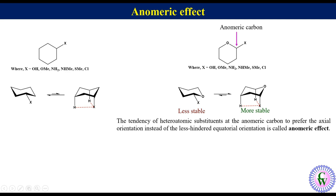The most accepted explanation for the enumeric effect is that the ring oxygen has two lone pairs in non-binding orbitals — out of two, one is axial and another is equatorial. In the chair conformation with axial substituent, the anti-bonding orbital of the Cx-sigma bond is parallel to the axial non-bonding orbital. Because of this, there is overlap between the axial non-bonding orbital of the ring oxygen and the anti-bonding orbital of Cx-sigma star.